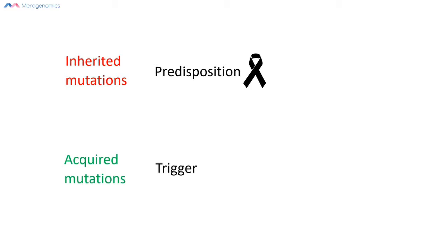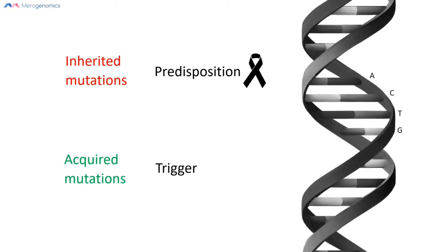DNA is in essence a program code that your cells use in order to function. This program code is composed of four repeating units — chemical bases or nucleotides — that for the sake of simplicity we will label as A, C,